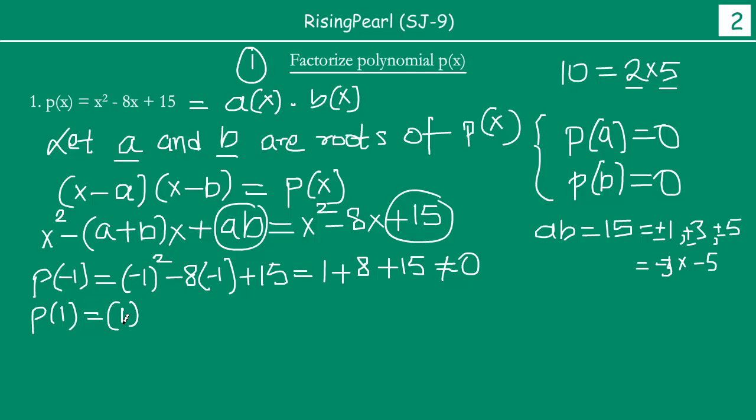So instead of now minus 1, now we will try plus 1. If you want to find out the value of polynomial at plus 1, this becomes x squared minus 8x plus 15 equal to, now 1 squared is 1, 8 times 1 is minus 8, plus 15. So 1 plus 15 is 16 minus 8 is 8 and it is again not equal to 0. So this means these are not the factors we are looking for.